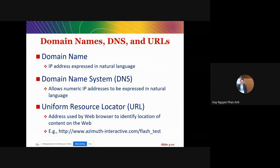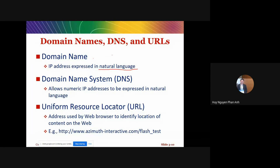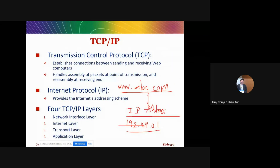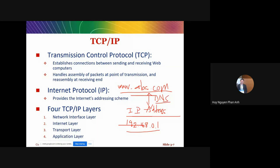Next, we discuss domain names. A domain name is simply the name in natural language for humans to read — like Alibaba, Tiki, and so on, using alphabet characters or numbers. The Domain Name System (DNS) allows the numeric IP address to be expressed as a domain name. DNS transforms the IP address into an alphabetic name.